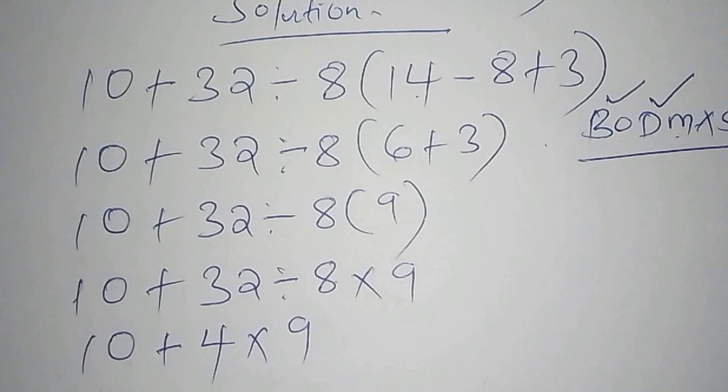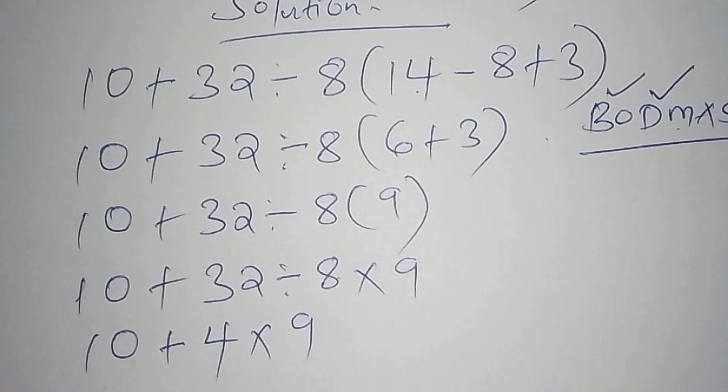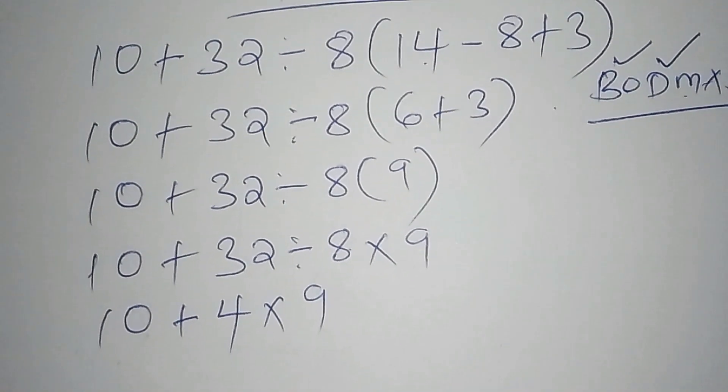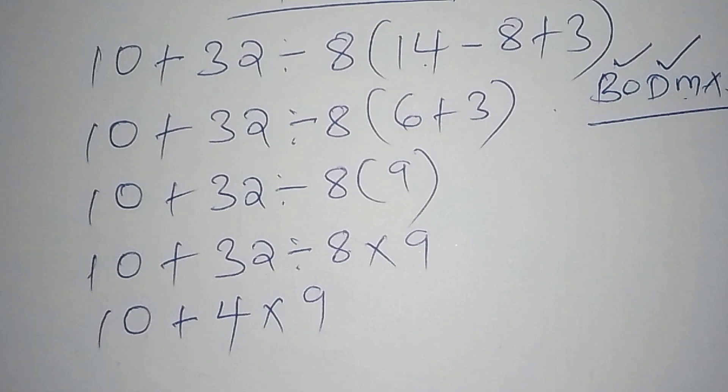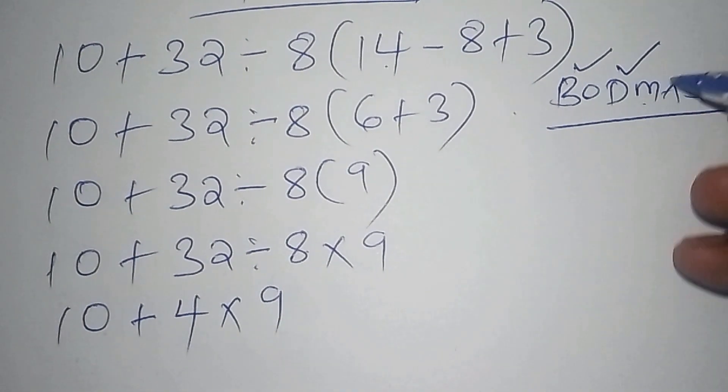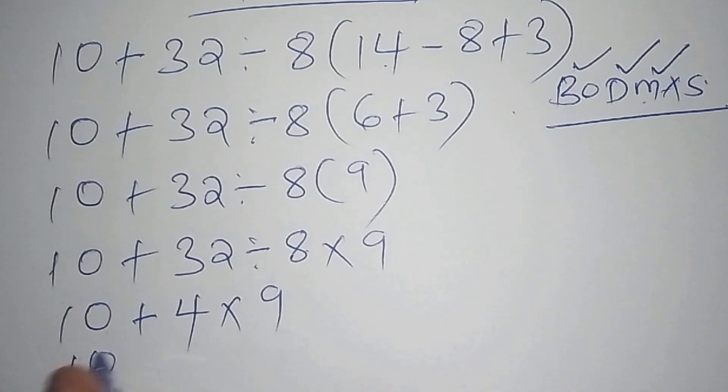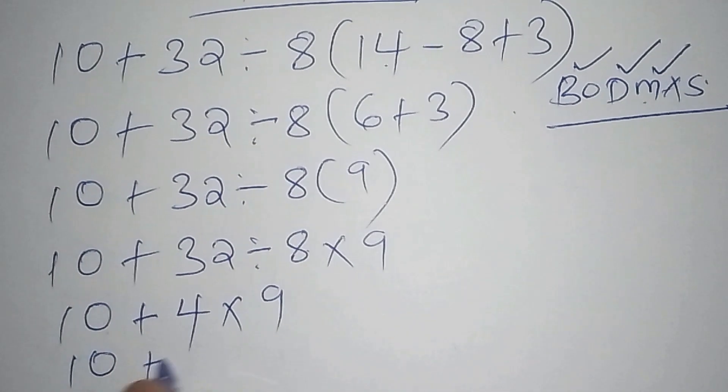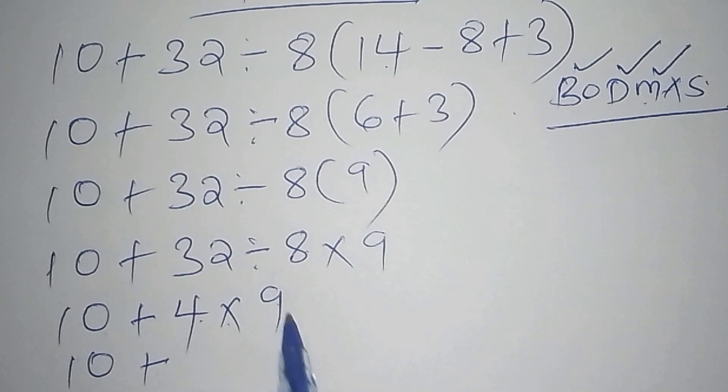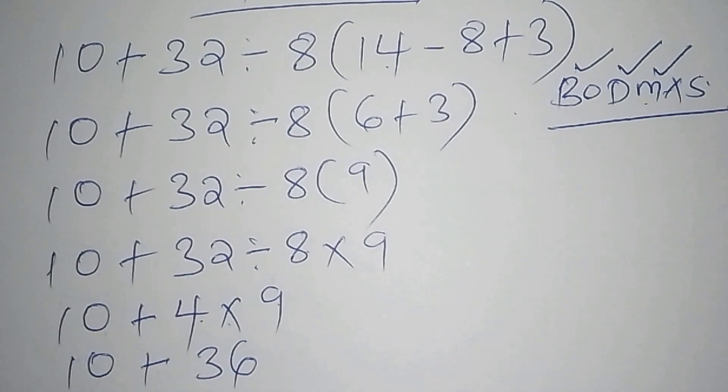So after that particular point, now we move to the next, our next step. So what is the next step now? Our next step now talks about the multiplication, that is M. So we shall now pick 10, 10 plus, now 4 times 9. And 4 times 9 is 36.